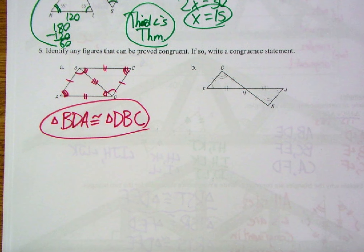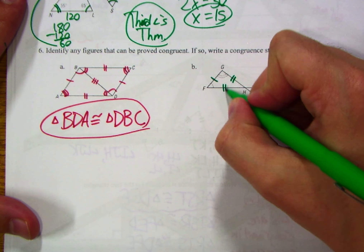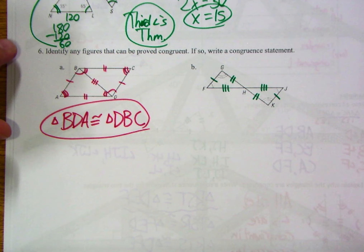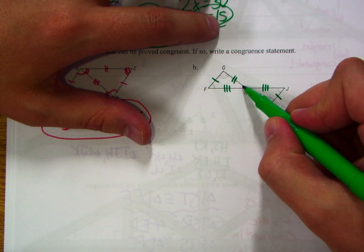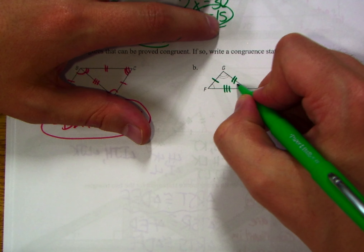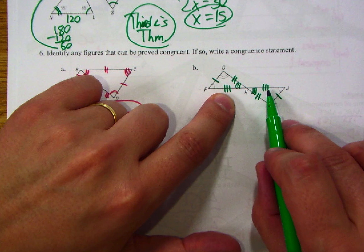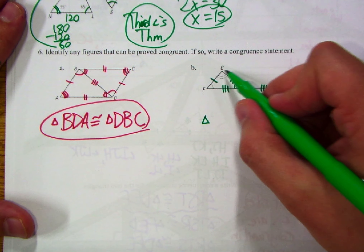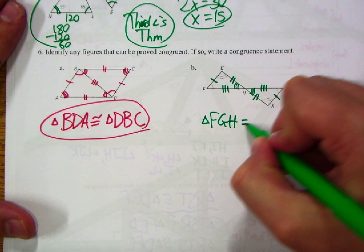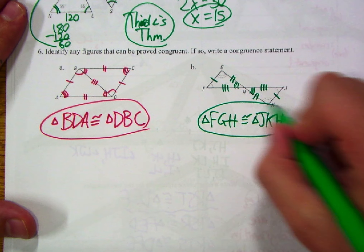Let's try the next one. Again: a 1-1, a 2-2, a 3-3 on the notches. Let's double check positioning: one is between a single and double arc, one is between a single and double arc. Two is between a double arc and an unknown — I can put a triple arc here and here by vertical angles, those must be congruent. Triple notch is between a 1 and a 3. Everything matches up. Triangle FGH is congruent to triangle JKH.